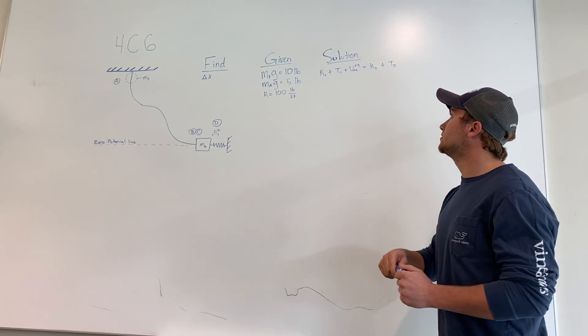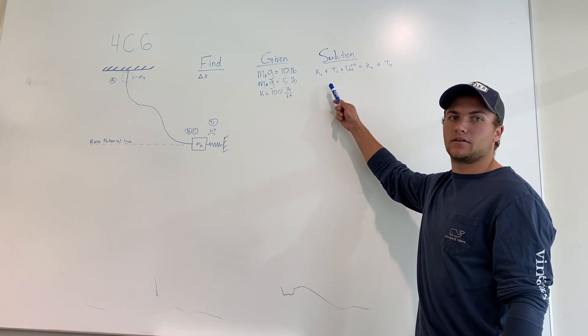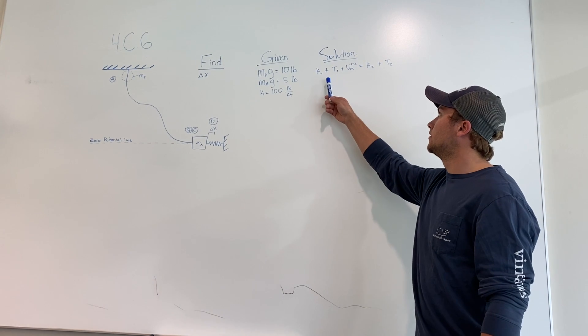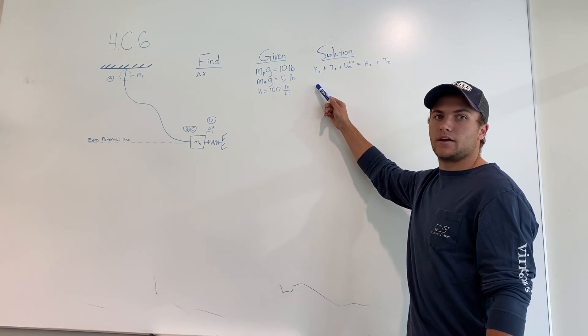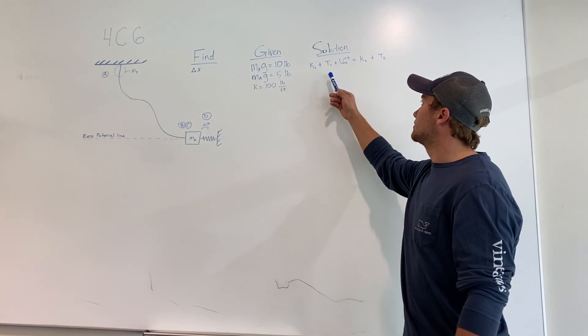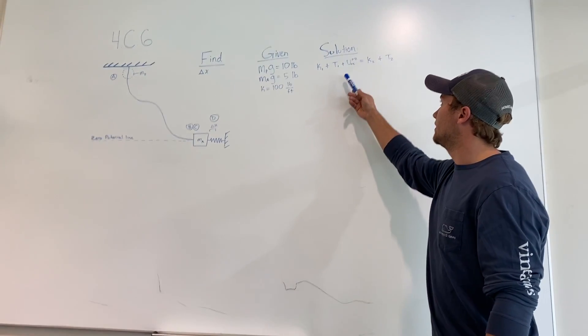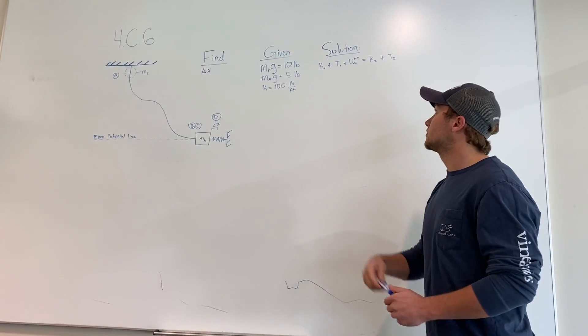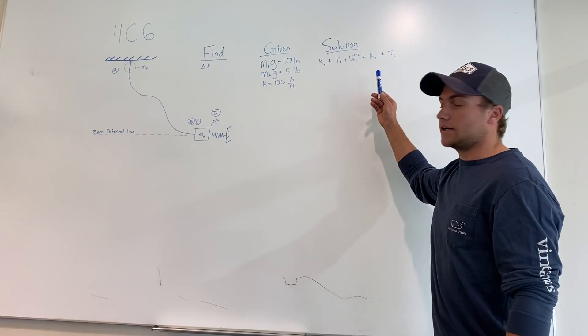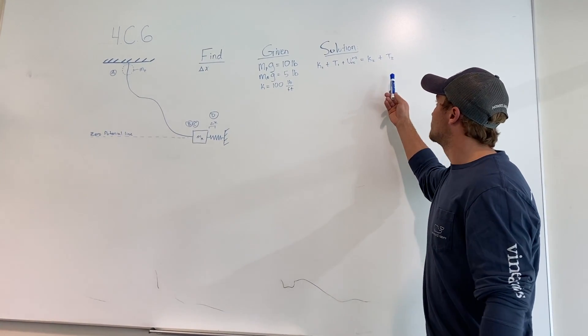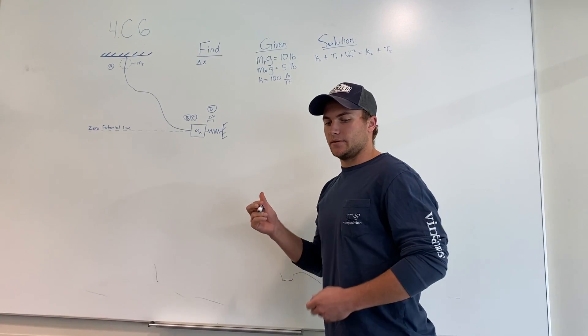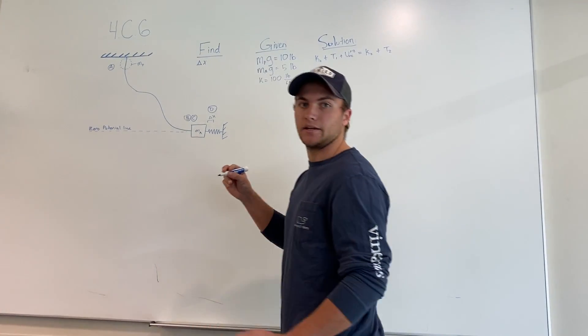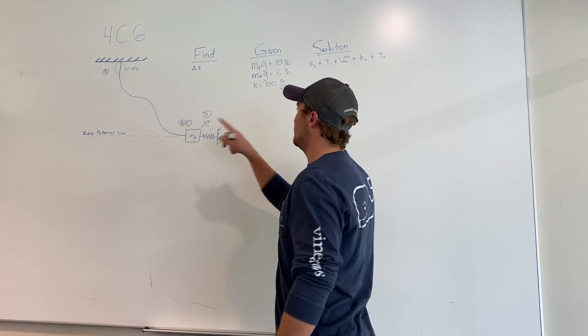Given the equations, we know already the work energy equation. The kinetic at 1 plus the potential at 1 equals the non-conservative work plus the kinetic at 2 plus the potential at 2. So we're going to make some tables of the kinetic and the potentials from A to B.